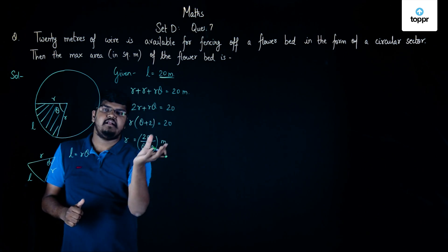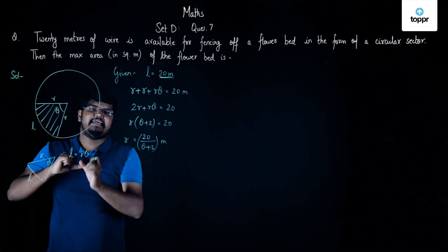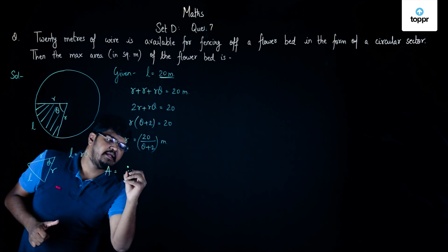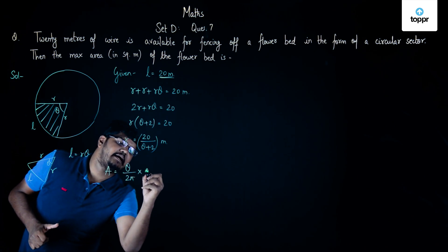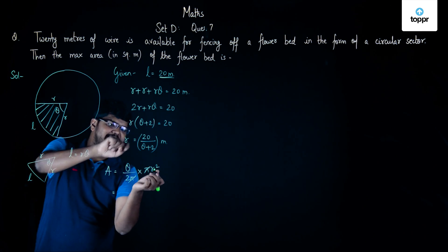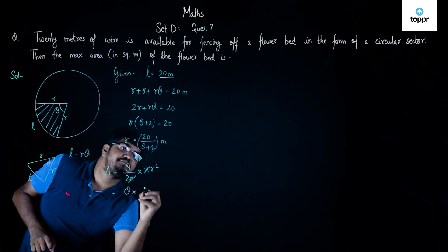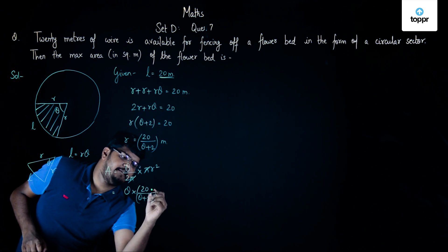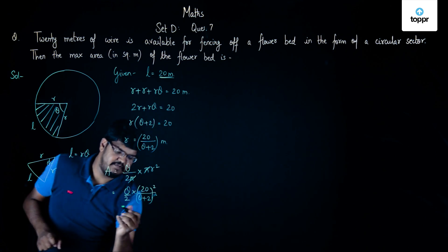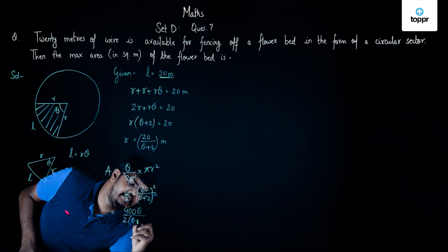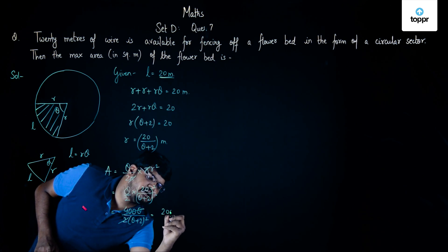So this is the value of r. Now to maximize the area, we first write the formula for the area of a sector: A = (θ/2π) · πr², which simplifies to A = (θ/2)·r². Substituting r = 20/(θ+2), we get A = θ · (20/(θ+2))² / 2, which simplifies to 400θ / (2(θ+2)²), giving us A = 200θ / (θ+2)².